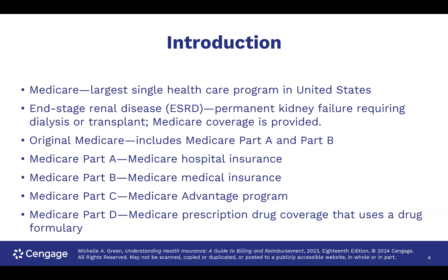How you're eligible for Medicare is based on a couple of things. We always think of it as being over age 65. It also covers people with end-stage renal disease requiring dialysis and transplant, as well as people who are disabled. It's kind of morphed a little bit over the years since Medicare went into effect in 1965.